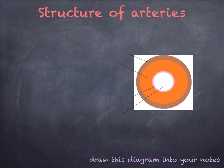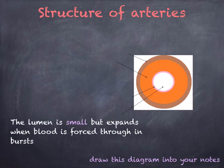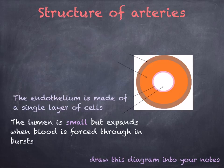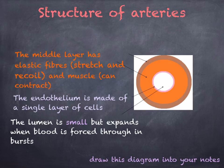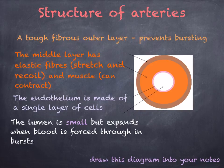Looking at the structure of an artery: in cross section it appears round. The inside channel carrying blood is called the lumen — it is small but can expand. The lining is called the endothelium, made of a single layer of cells. The middle layer has elastic fibres and muscle — elastic fibres allow it to stretch and recoil, and the muscle allows it to contract. The outermost layer is a tough fibrous layer that prevents the artery from bursting.